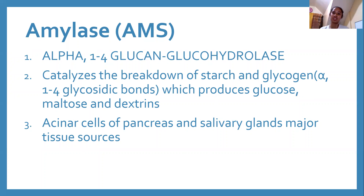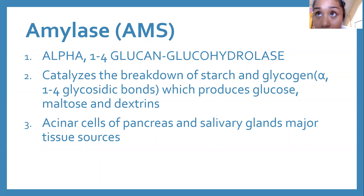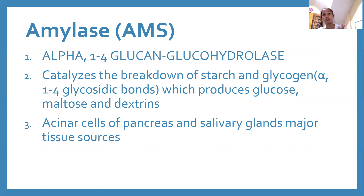Amylose is found in starch and glycogen. The products of amylase activity are glucose, maltose, and dextrin. Amylase is distributed in the pancreas and the salivary glands — specifically the acinar cells of the pancreas and salivary glands.